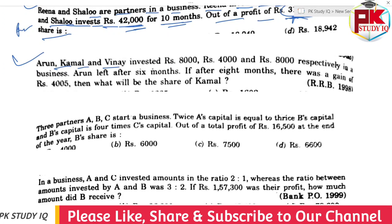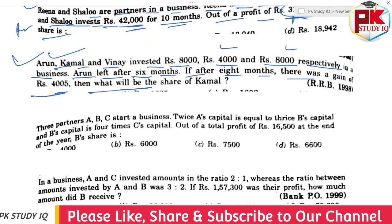Arun, Kamal, and Binoy invested Rs. 8,000, Rs. 4,000, and Rs. 8,000 respectively in the business at the same time. After 6 months, a change is made in the investment. After 8 months, a gain of Rs. 4,500 is recorded. What will be the share of Kamal? We will explain it in the description.